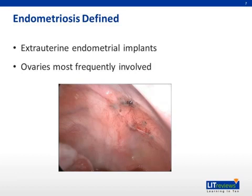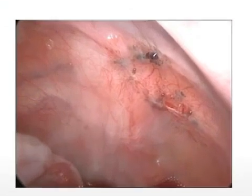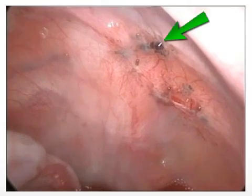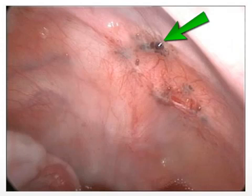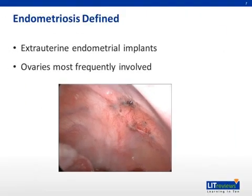These implants can land nearly anywhere within the abdomen: ovaries, bowel, parametrium, fallopian tubes, and deep in the pelvic cul-de-sac. The dark and brownish spots on this photo are sites of implantation in the peritoneum. The color typically comes from menstrual bleeding that has no passage out of the body due to implantation outside of the uterus. So your patient will continue to have regular periods with her regular bleeding, but her endometriosis sites will also cycle each month and cause symptoms.